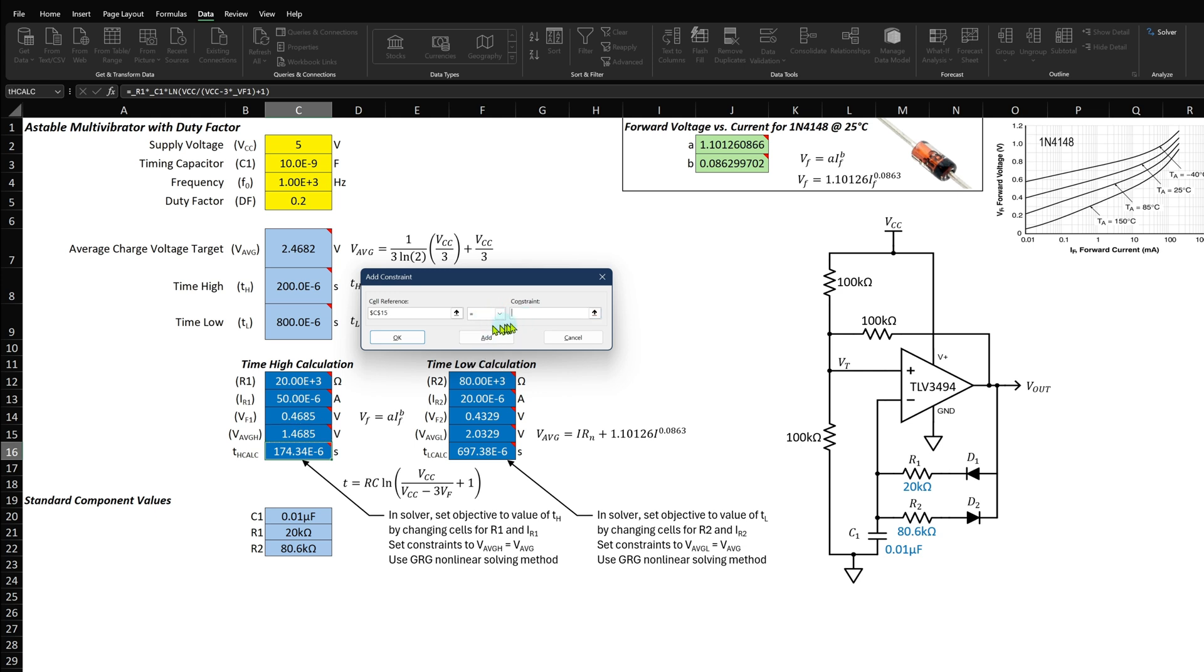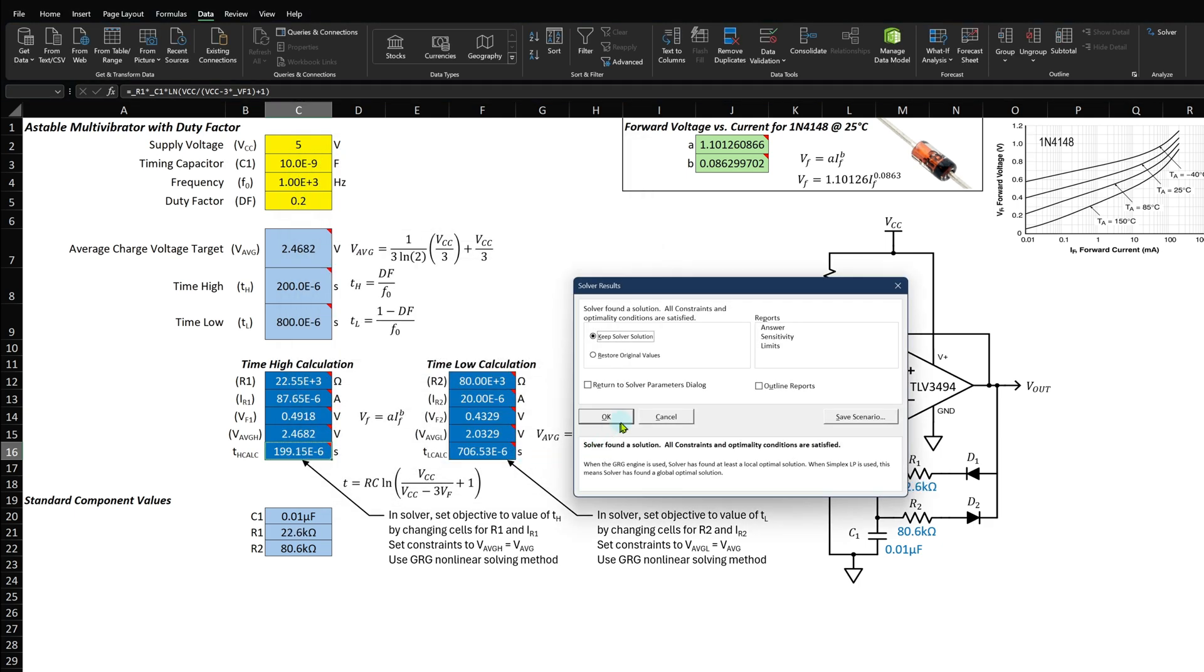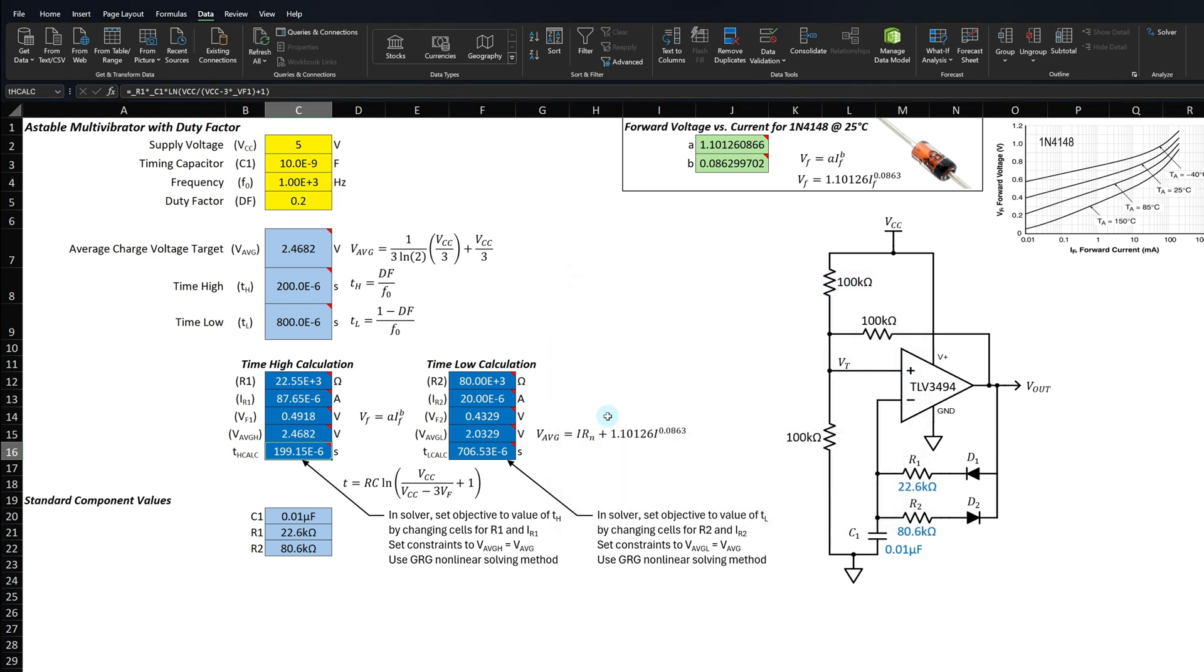Now we need to run the constraint. Select Add and make the cell reference for the V average for high time and set it equal to the constraint of the target V average cell. The method by default is the GRG nonlinear method. Then select Solve. A dialog box will pop up that says the solver has found a solution and select that option to keep the solver solution. Notice the Time High Calculation is very close to the target.